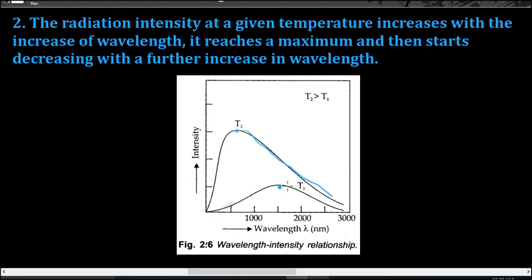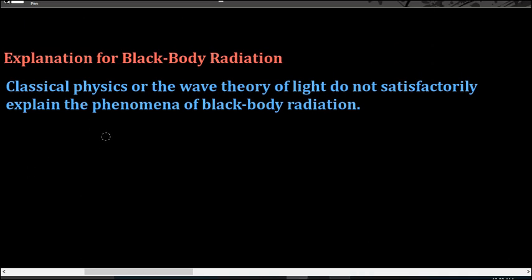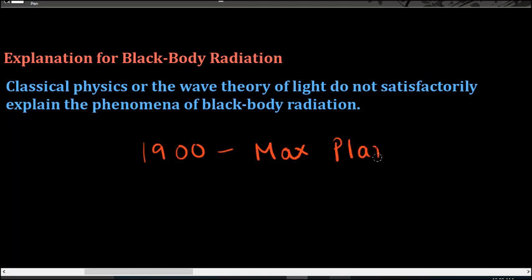Now let us come to the detailed explanation of the black body radiation. Classical physics or the wave theory of light does not satisfactorily explain the phenomenon of black body radiation. In 1900, a scientist named Max Planck gave the first explanation for the black body radiation.